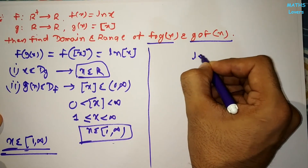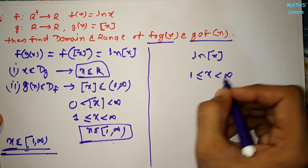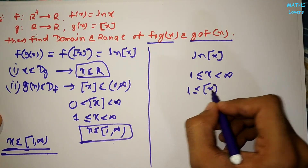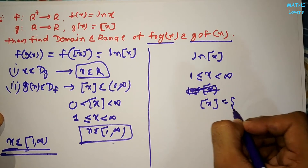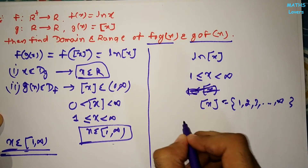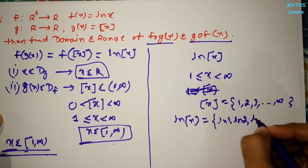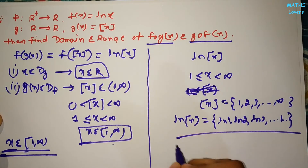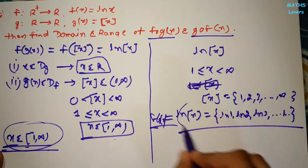For the range of f(g(x)) = ln(⌊x⌋): with x ∈ [1, ∞), the greatest integer ⌊x⌋ takes values 1, 2, 3, ... up to infinity. So ln(⌊x⌋) takes values ln 1, ln 2, ln 3, and so on. This discrete set is the range of f(g(x)). So the domain of f(g(x)) is [1, ∞) and the range is {ln n : n ∈ ℕ}.